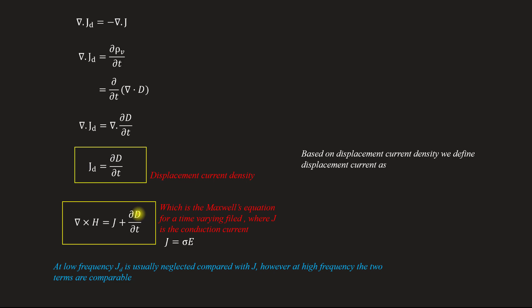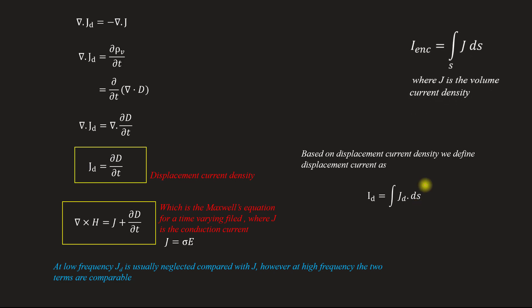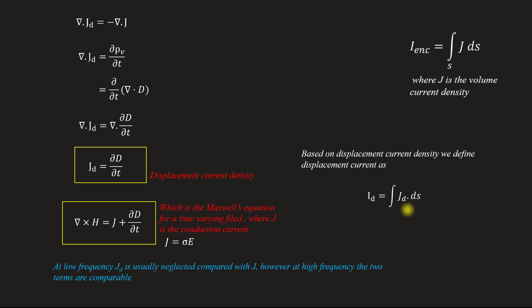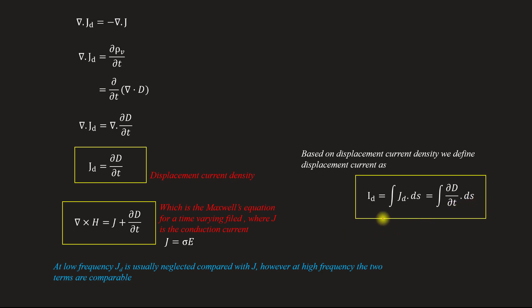Based on the displacement current density, we have the displacement current expression as: current I equals the surface integral of JD dot dS. This is the expression for displacement current. These are very important expressions that you have to consider.